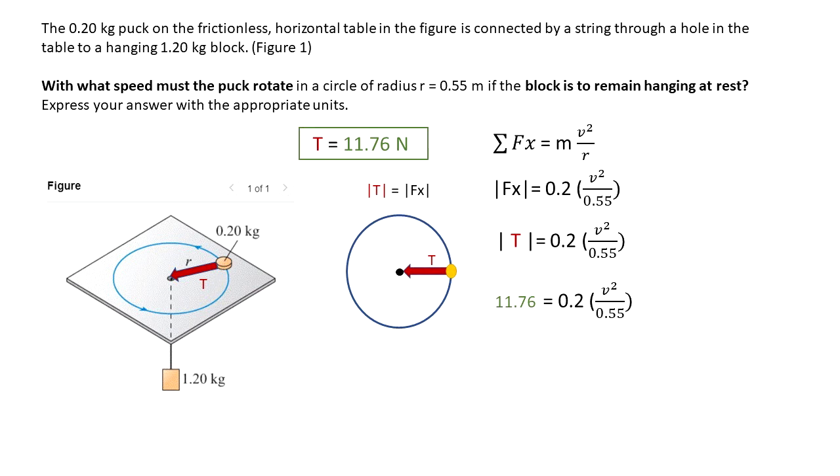I'm going to do some algebra. And I get that the speed squared is equal to 32.34. And when I take the square root, I get that the magnitude of the velocity or the speed is equal to 5.687 meters per second.